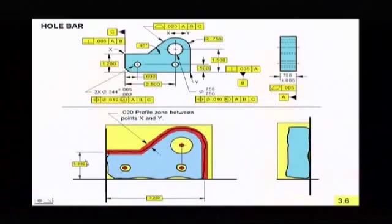That's the idea behind profile. Profile gives you a basic dimension, and the basic dimension location locates the center of the tolerance zone, and then you give a tolerance zone on either side.